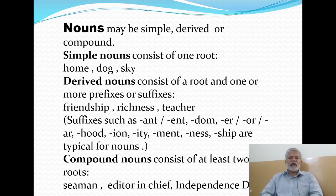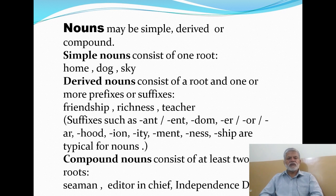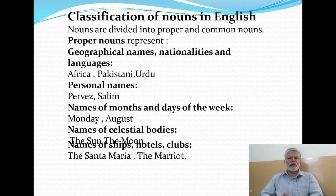Then there are compound nouns, which are made using two or more roots. For example, 'seaman' — sea is a noun and man is another noun, combined to make a new noun. 'Editor-in-chief' — editor is a noun, chief is another noun, and in is a preposition, and using these three words we have made a compound noun. 'Independence Day' — independence and day are both nouns combined to form a compound noun.